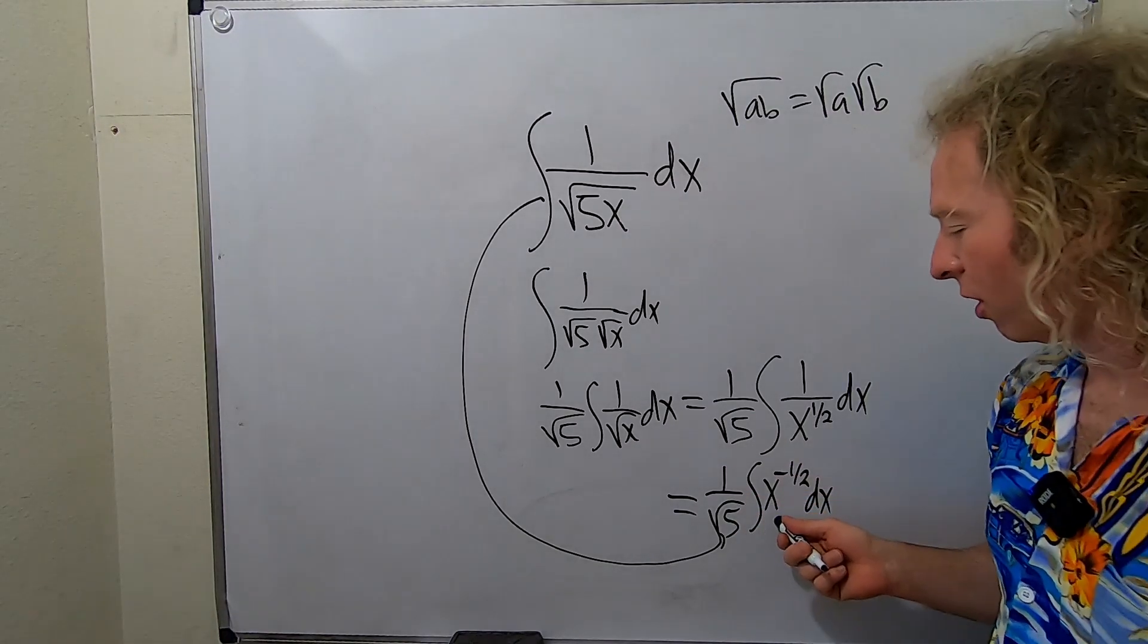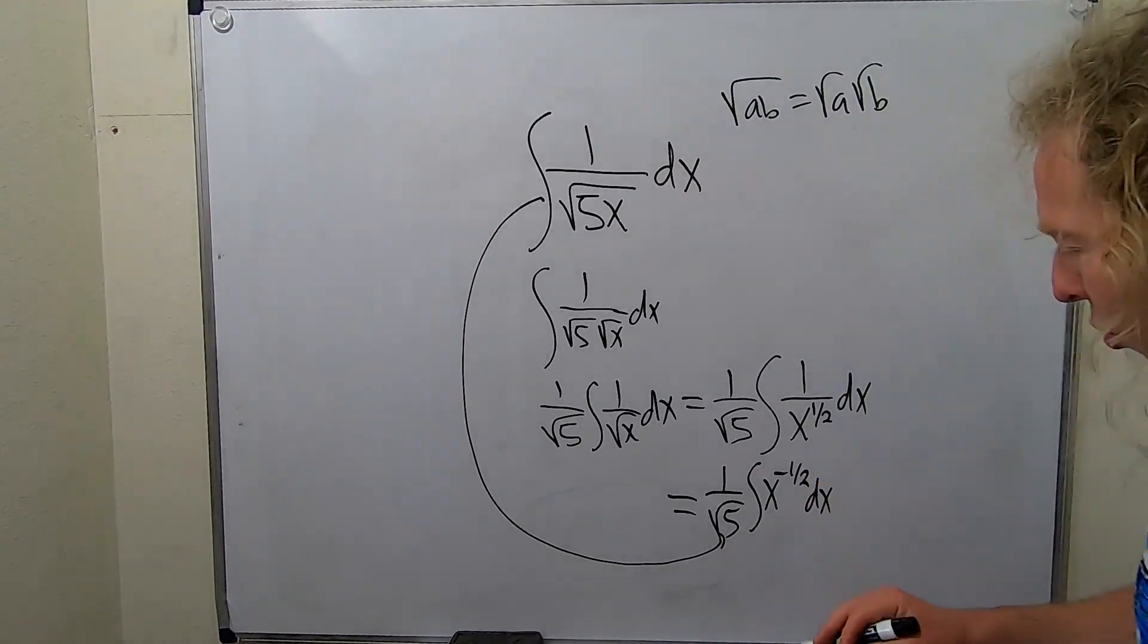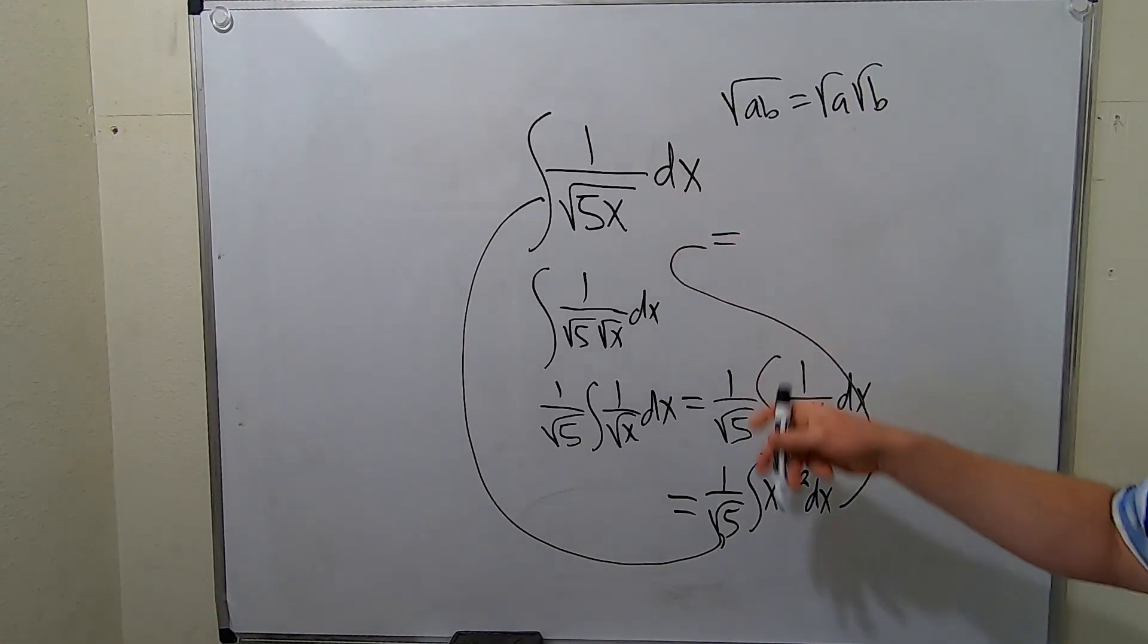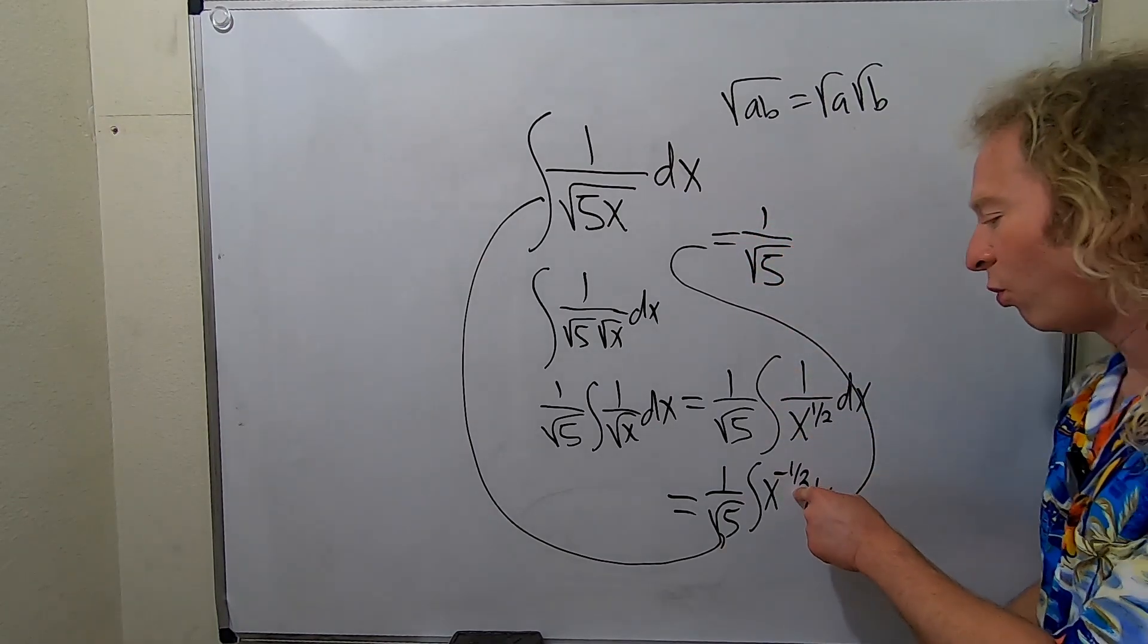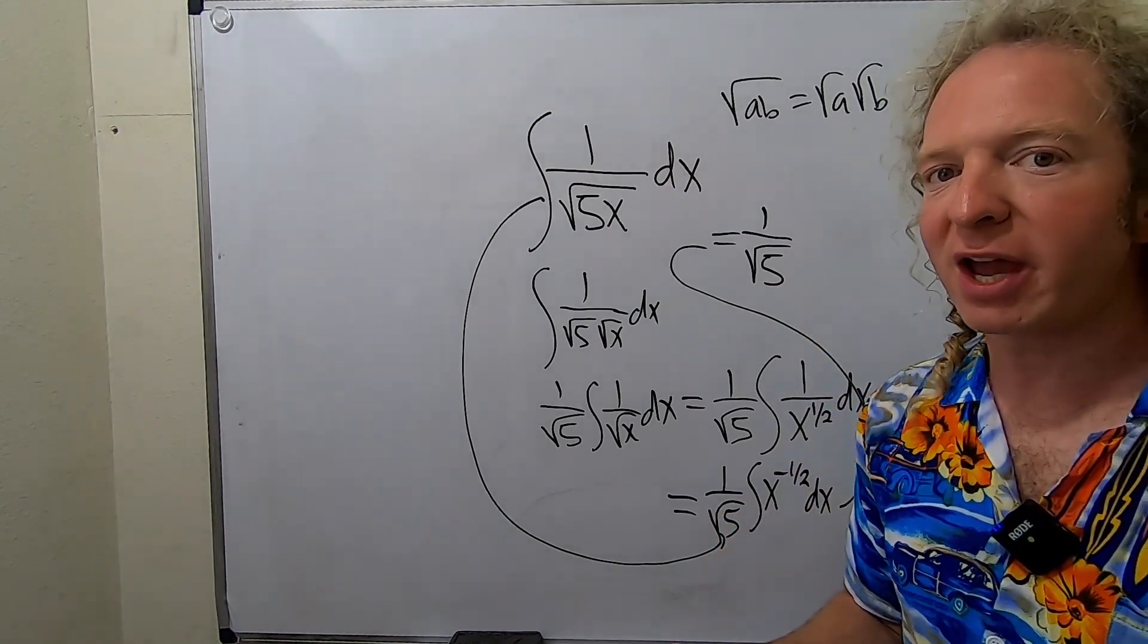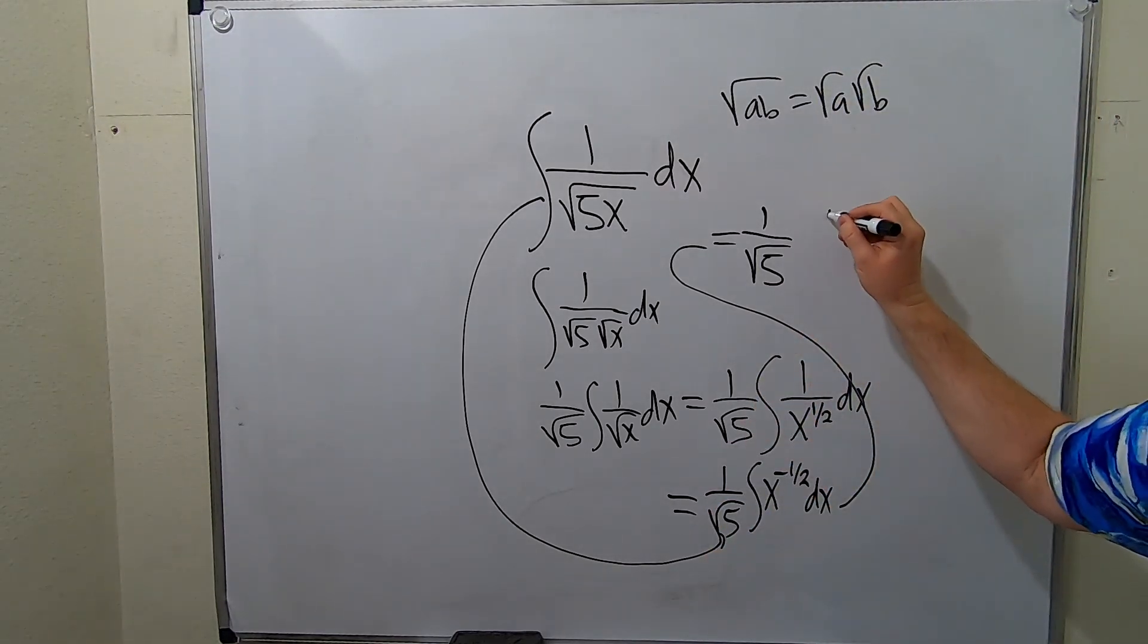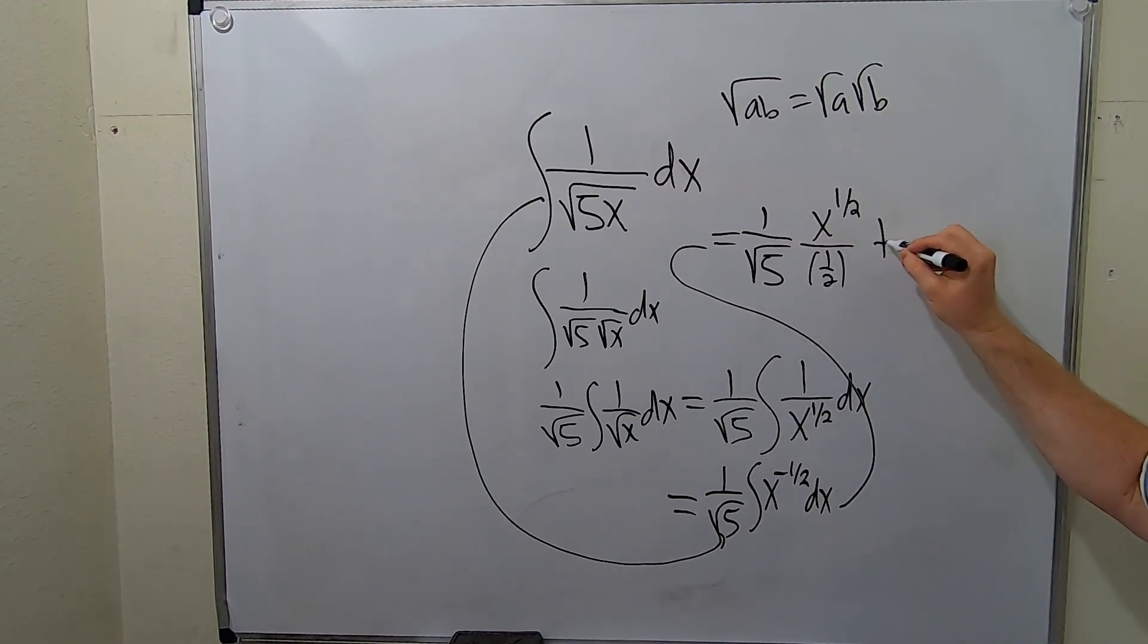At this point, you are where you want it to be, right? You have x to a power. So now you can use the power rule. Let me come up here and do it. So the 1 over the square root of 5 hangs out. You add 1 to this exponent here. So it becomes 1 plus negative 1 half is 1 half. So this will be x to the 1 half divided by 1 half and then plus our c.